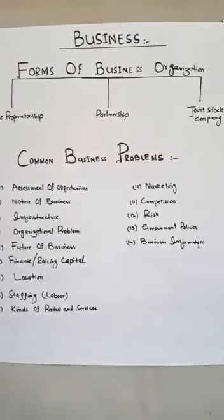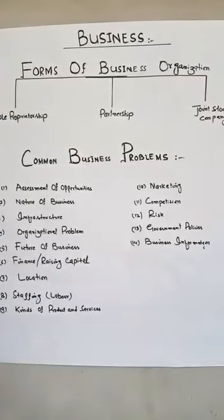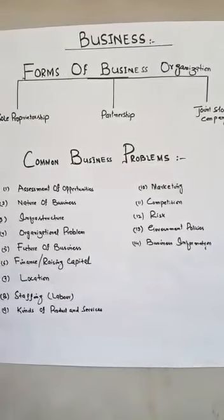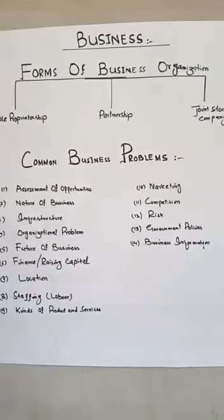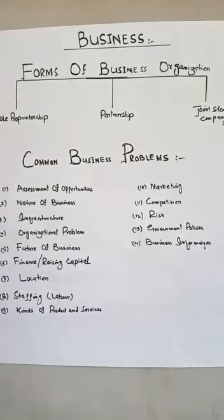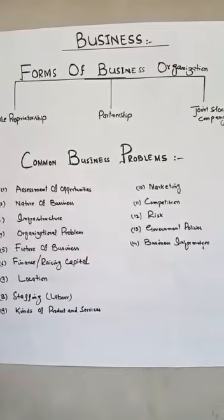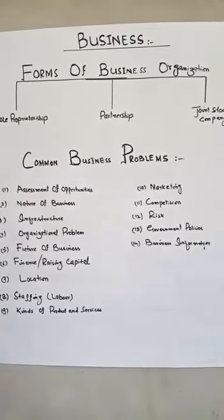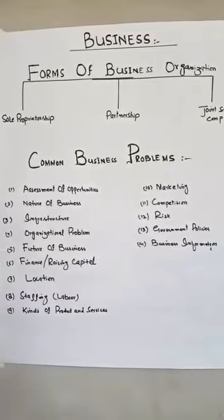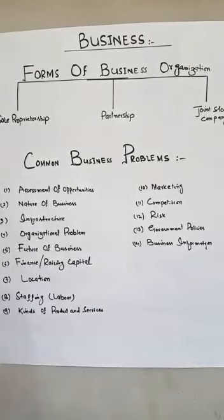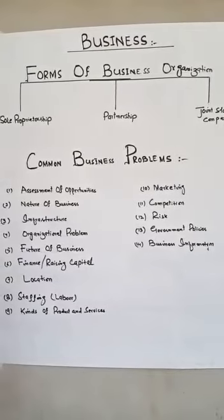Sole proprietorship business is that type of business which is owned by a single person. He enjoys all the profit, and he bears all the profit and all the risk. Sole proprietorship business is very easy to form and very easy to dissolve, because there is no need of large capital.